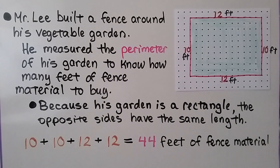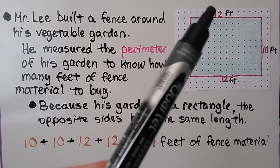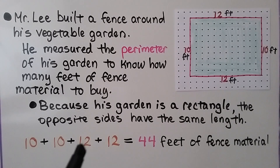Mr. Lee built a fence around his vegetable garden. He measured the perimeter of his garden to know how many feet of fence material to buy. Because his garden is a rectangle, the opposite sides have the same length. If this side is 10 feet, then this side will be 10 feet. And if this side is 12 feet, then this side will be 12 feet, because it's a rectangle. We can add 10 plus 10 plus 12 plus 12. That's 20 plus 24, which equals 44 feet of fence material. His perimeter is 44 feet around his vegetable garden.